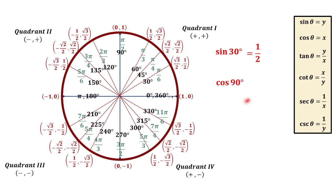If we would like to get cosine of 90 degrees, in reference to these coordinates, the x-coordinate is cosine of theta, or cosine 90, so that would be zero.